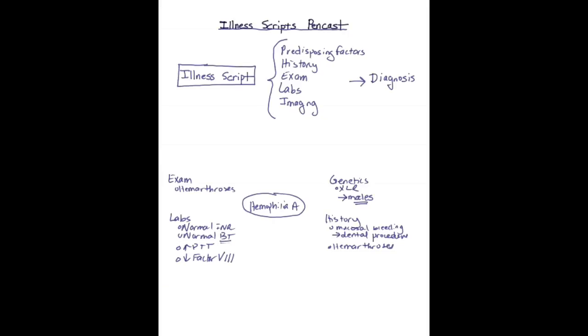The bleeding time in hemophilia is normal, because although the clotting cascade is affected, the platelet aggregation, which is the determinant of bleeding time, is preserved.